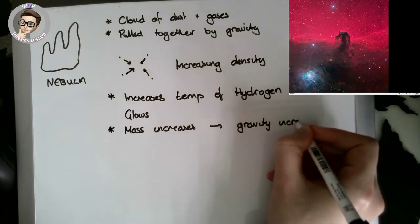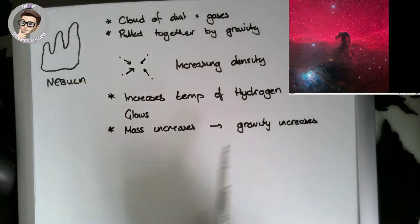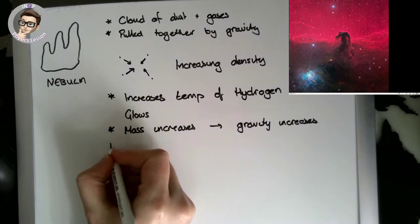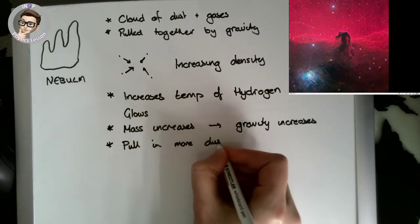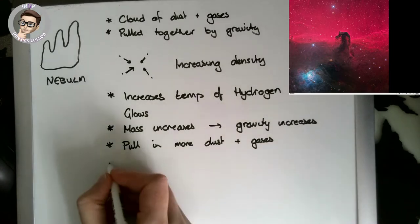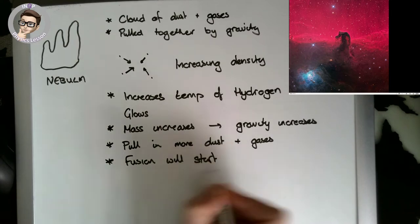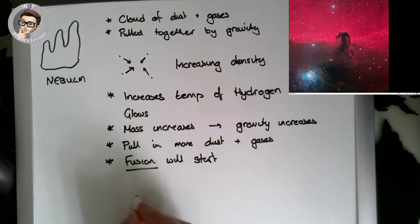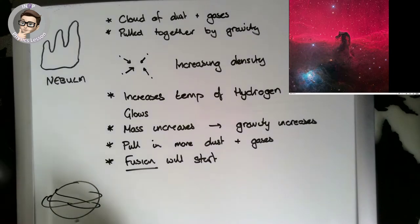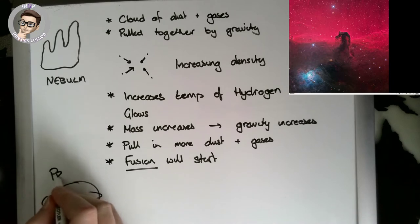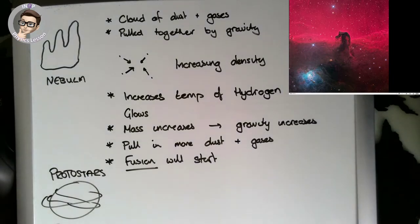As gravity increases we pull in more dust and gas. We get more dust and gases being pulled in, and eventually fusion will start. Once we have fusion of those bits of dust and gases, we end up with our first structure, which is called a protostar.